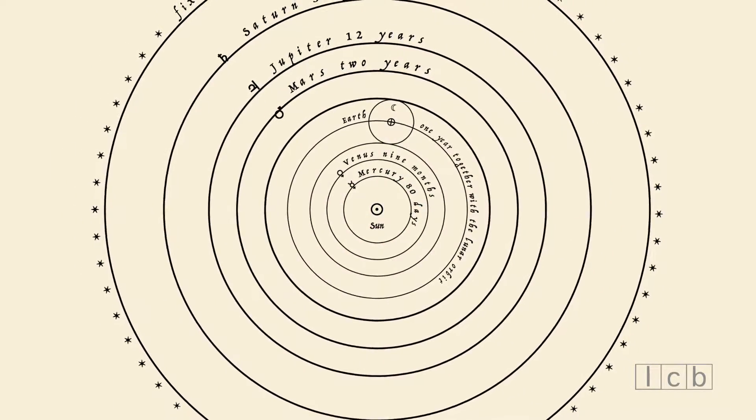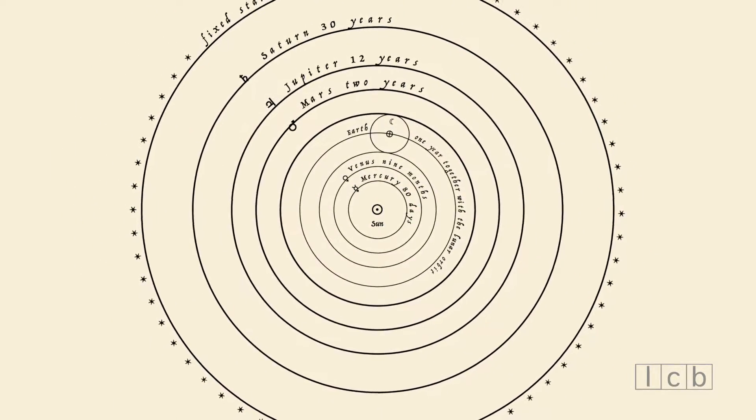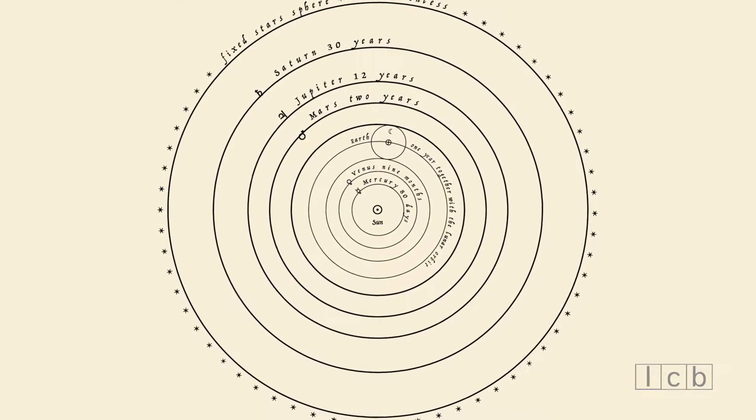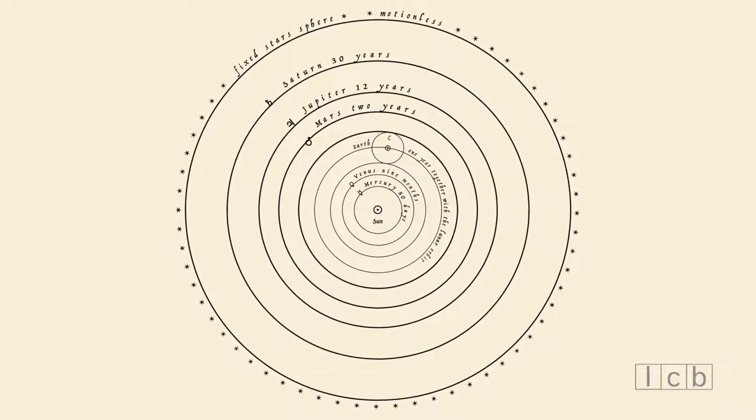Contrary to common belief, the Sun is not precisely at the center of the Copernican Universe, nor do the planets orbit around it on perfect circles.